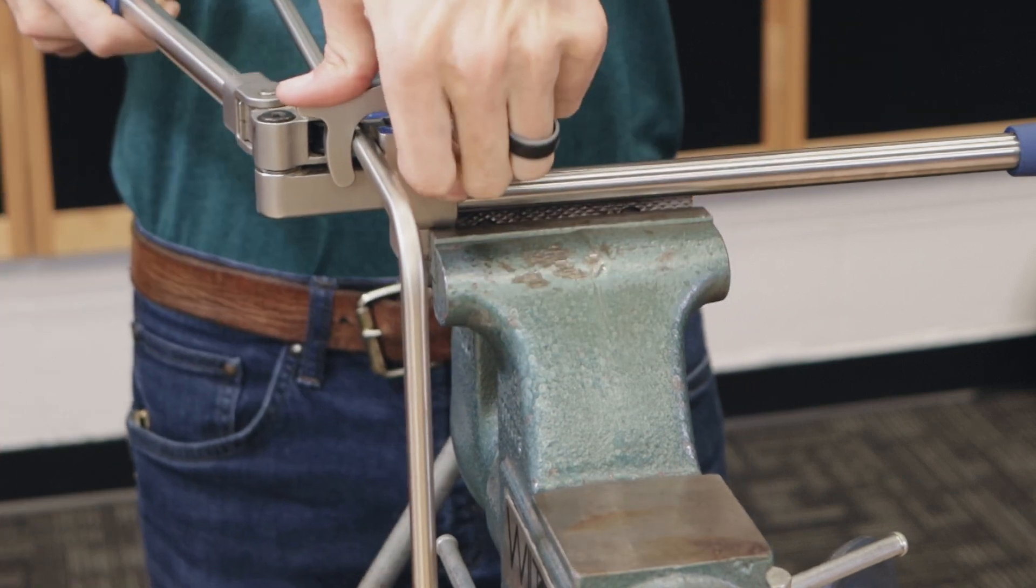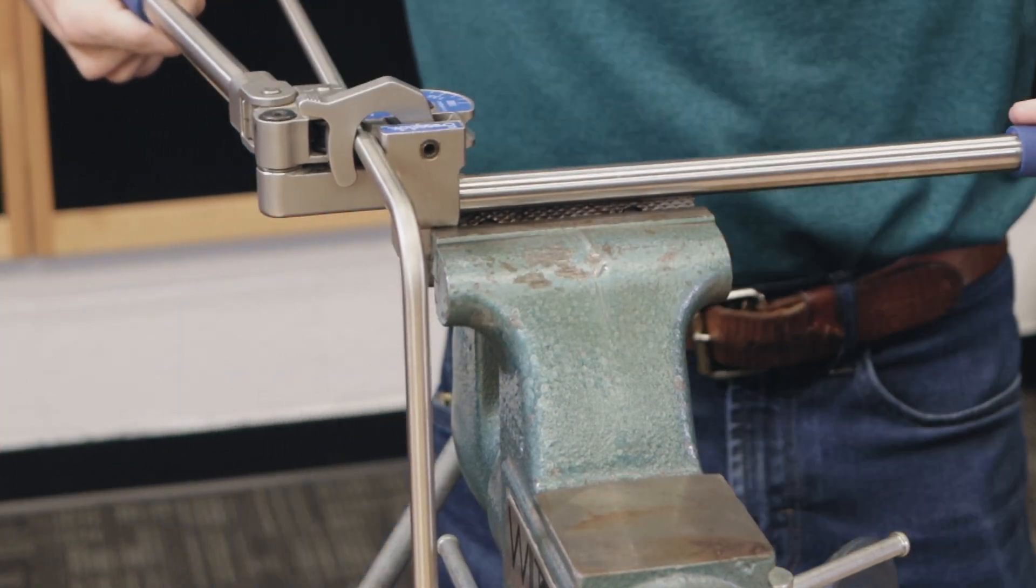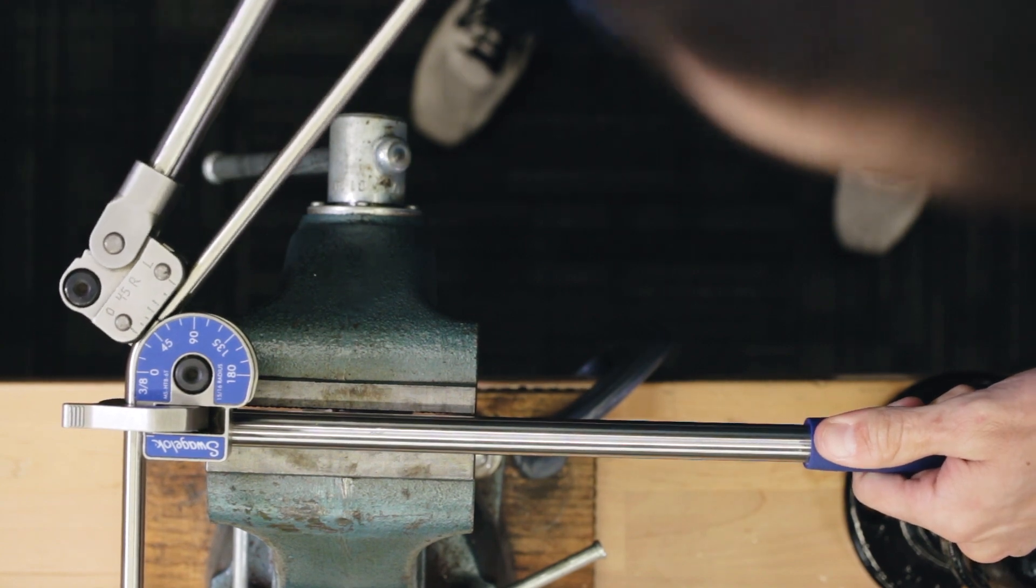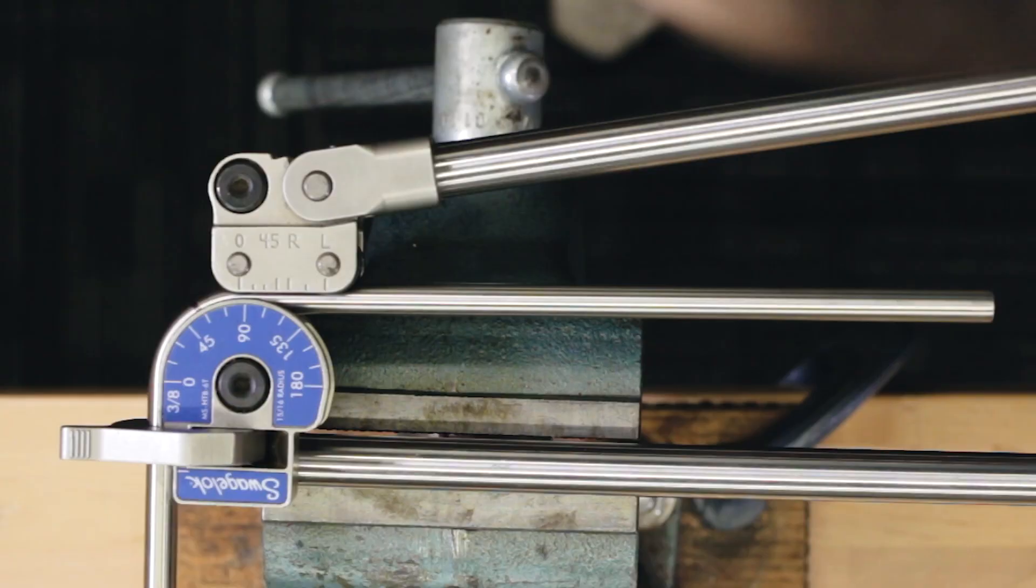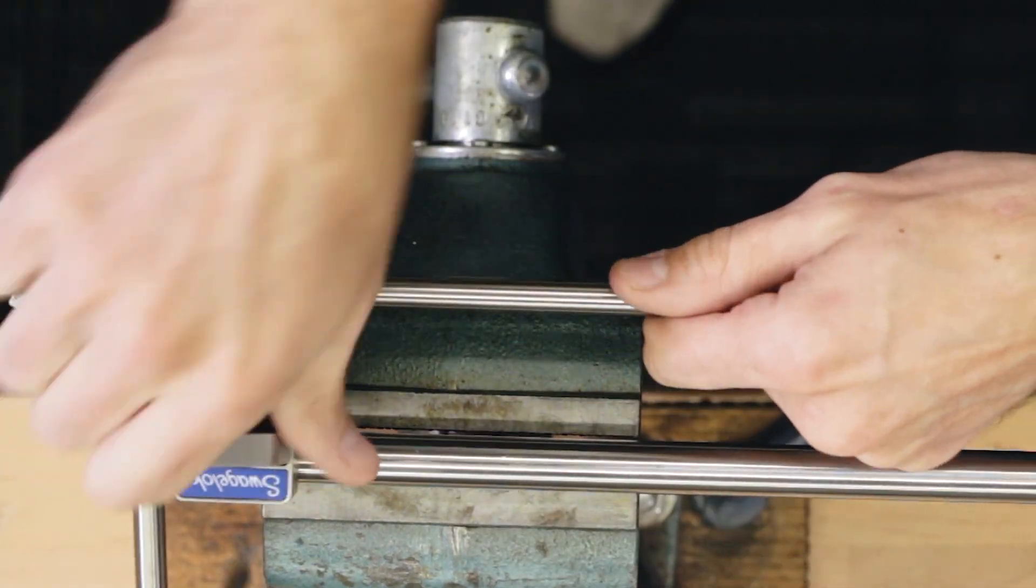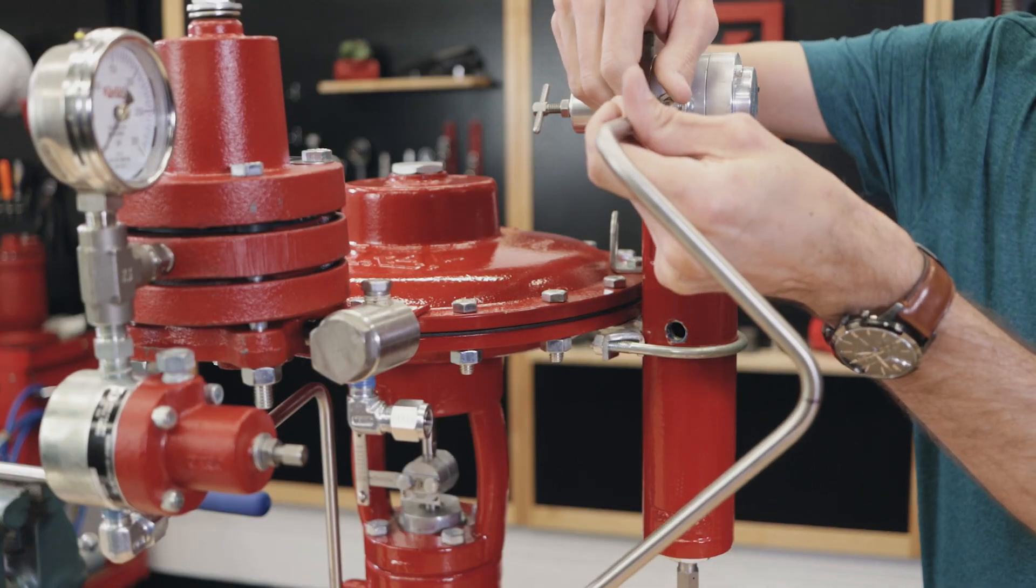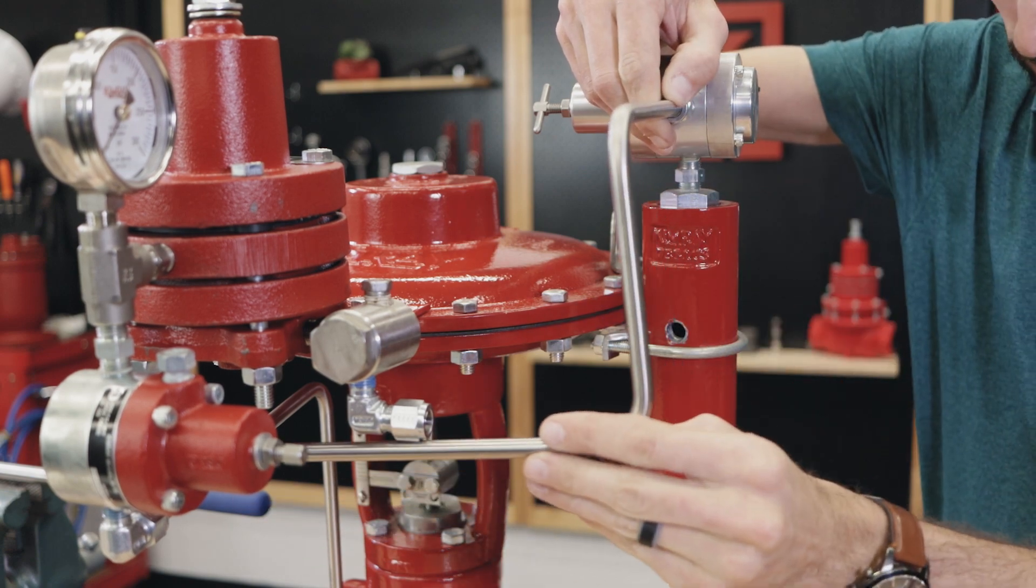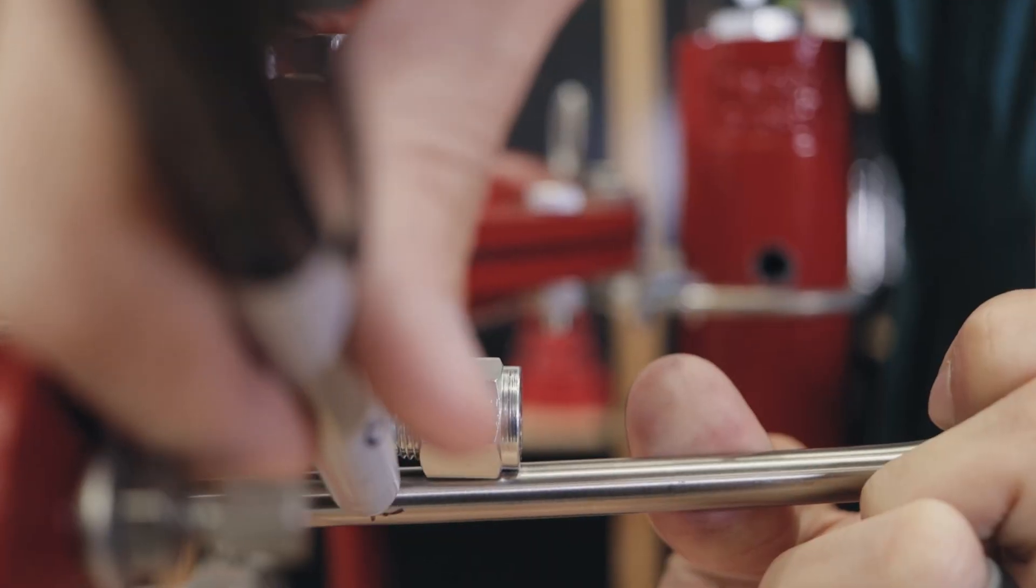Secure the latch. Bend the arm down to bring the zero to the 90 degree indicator, maybe a little bit more, then release. With the tubing back in the fitting, mark the final length based on the start of the shoulder of the fitting body.